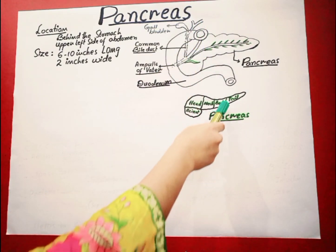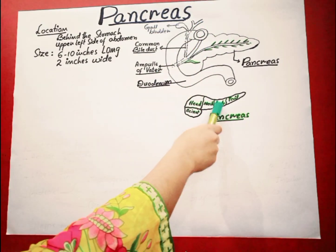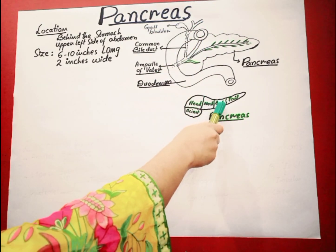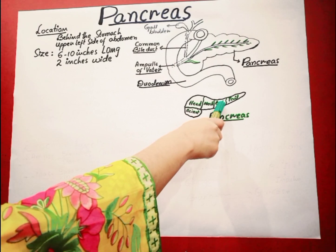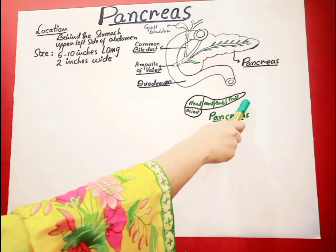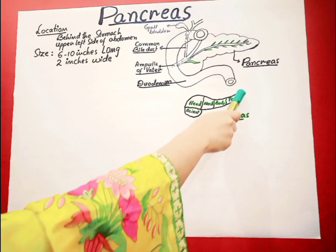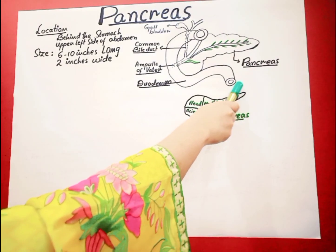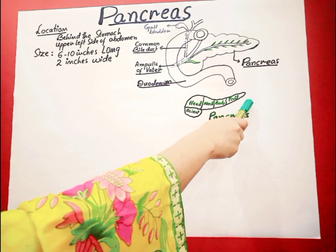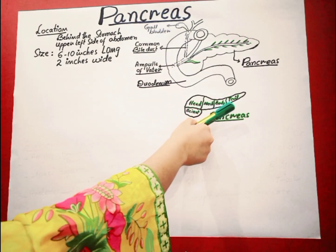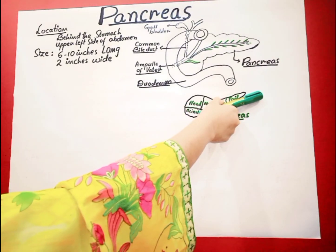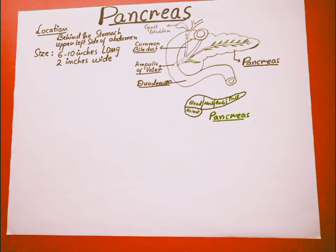The central section of the pancreas is called the neck or body, while the ending part where the pancreas ends is called the tail. From this tail it extends to the left side. There are also several major arteries and major vessels which surround this pancreas.